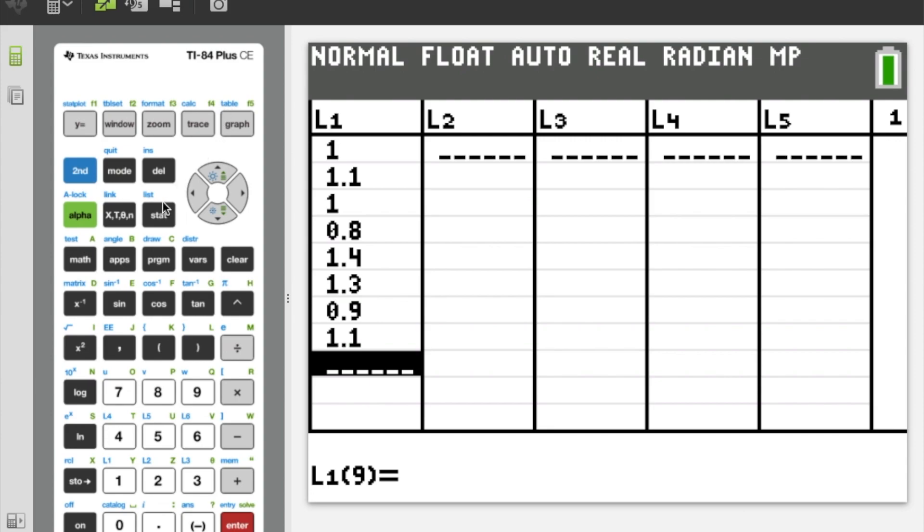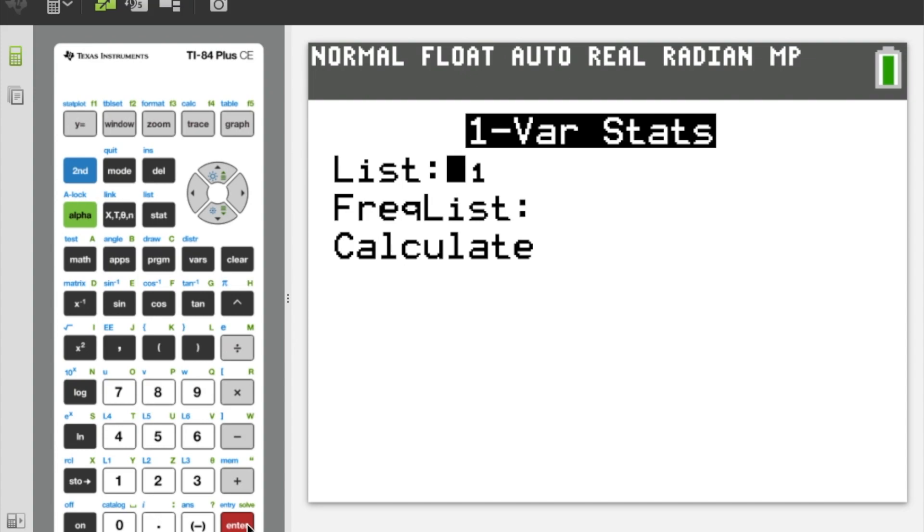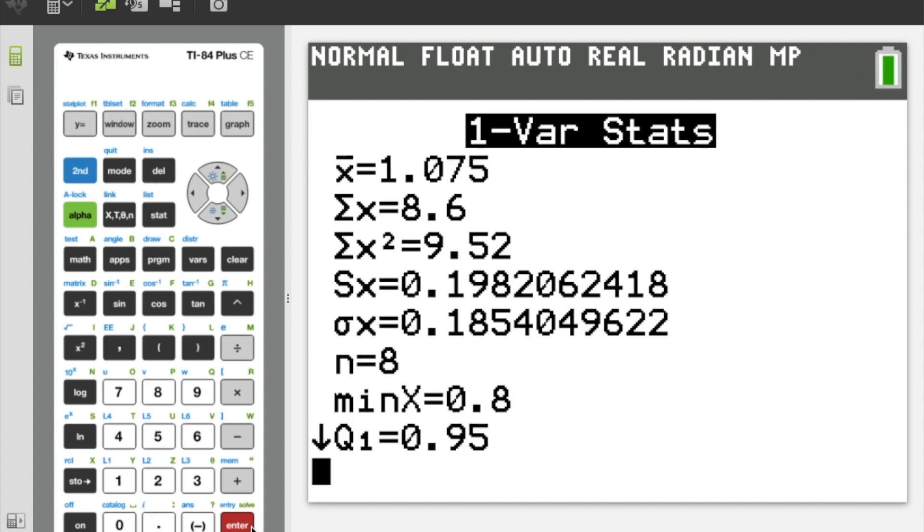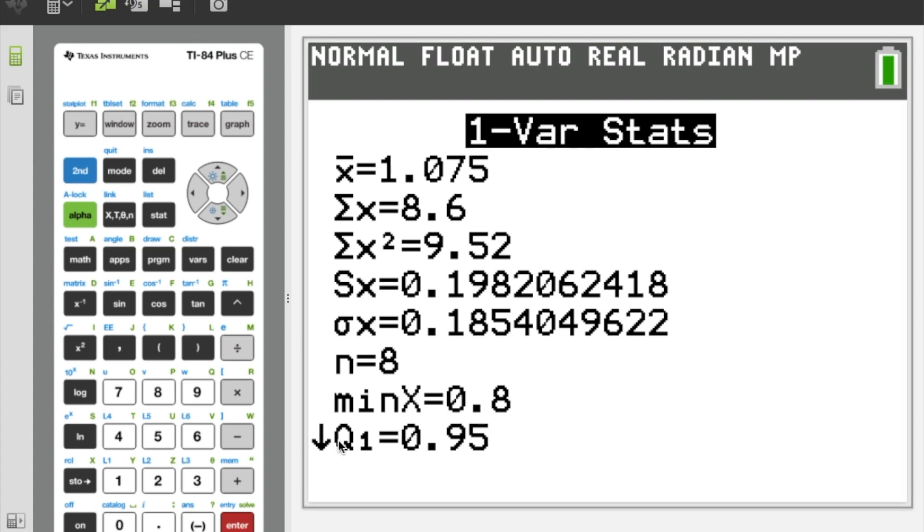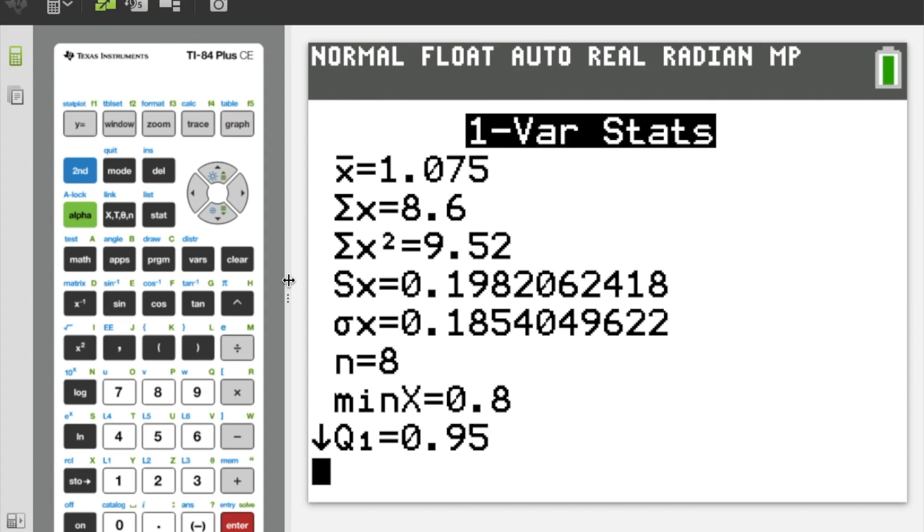So here is my data that I've already entered in just to save ourselves some time. And as before, I'm going to go to 1-var stats, head down to calculate, and it's right there. It's already there for us. We don't have to do any of the crazy calculation by hand. Here it is. So again, Sx is our estimated standard deviation for the population. This sigma x is the standard deviation of just the information that we entered into the calculator. So what I'm really looking for is my Sx right here. So for the whole population, we're going to say 0.198.